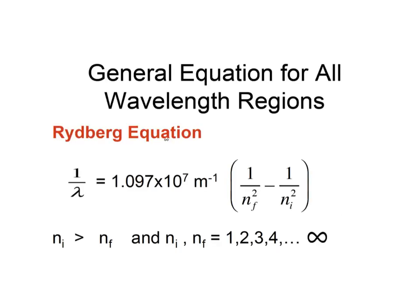Those colors are in the visible region. This equation has N-final equals 2 for visible light. If N-final equals 1, you get the ultraviolet series. If N-final equals 3, you get infrared. The rule is that N-initial must be greater than N-final. So with N-final equals 1, N-initial can be 2, 3, 4, 5, 6... With N-final equals 2 you get the visible lines; with N-final equals 3 you get infrared, and so on. This is the general Rydberg expression.